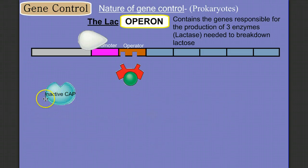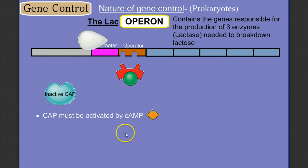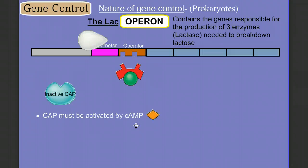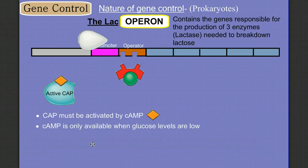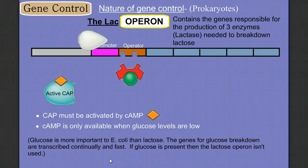CAP is inactive and must be activated by a molecule called cAMP — cyclic adenosine monophosphate — which is related to ADP and ATP; basically ATP minus two phosphate groups. cAMP is only available when glucose levels are low. Glucose is more important to E. coli than lactose — it's easier to break down. So even if lactose is present, the operon isn't used if glucose is available. But when glucose levels are low, cAMP levels rise, activating CAP.